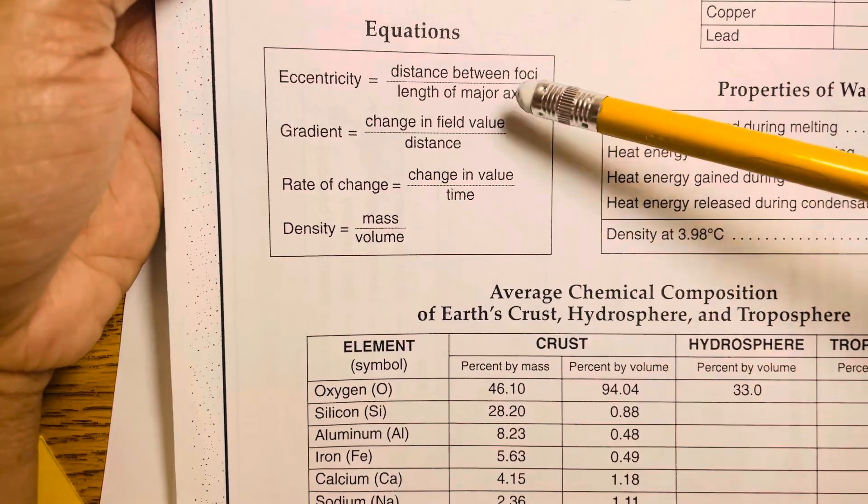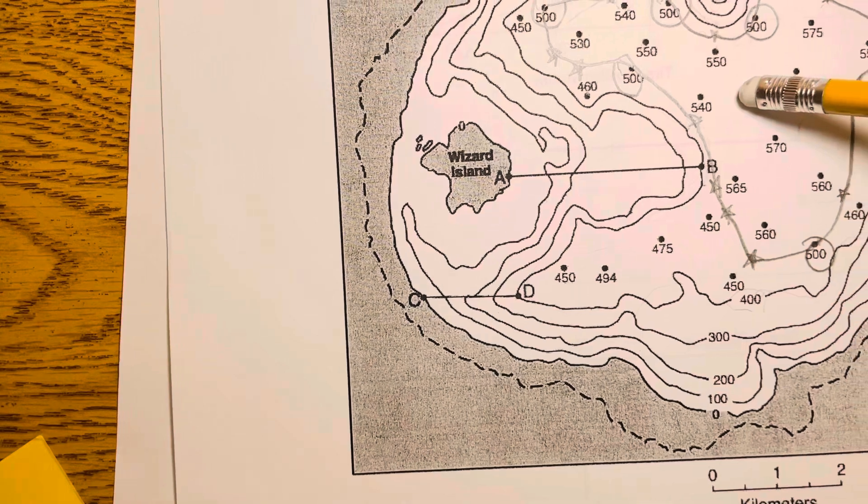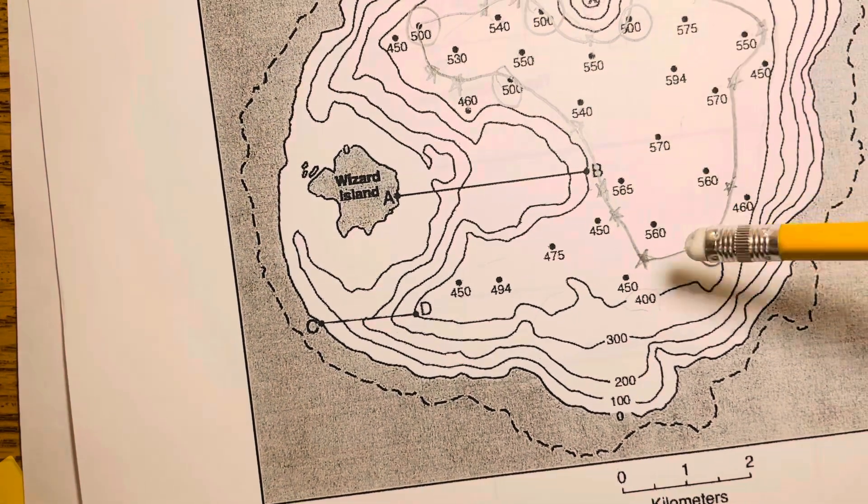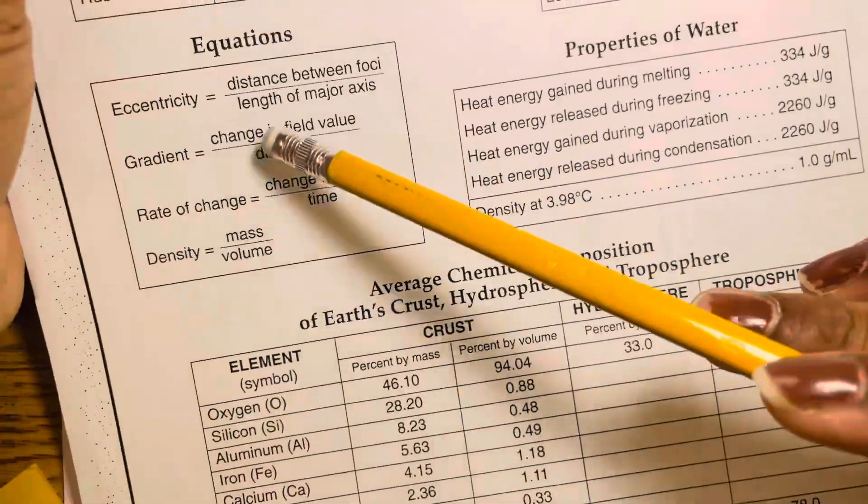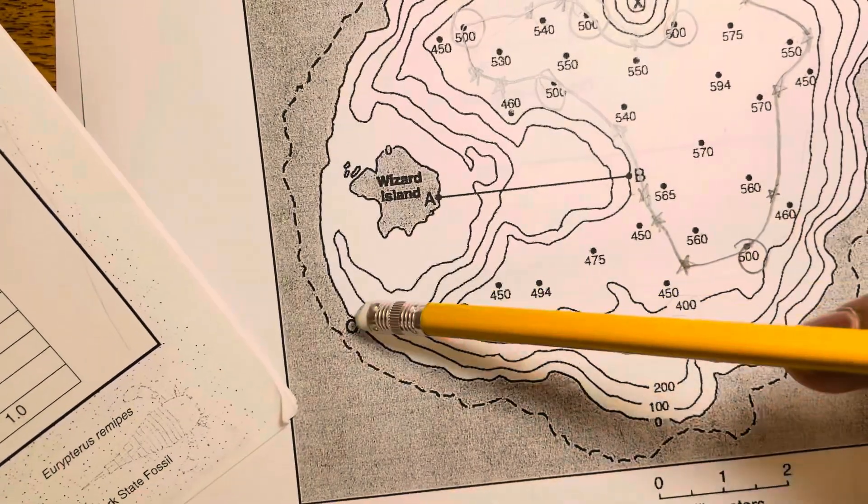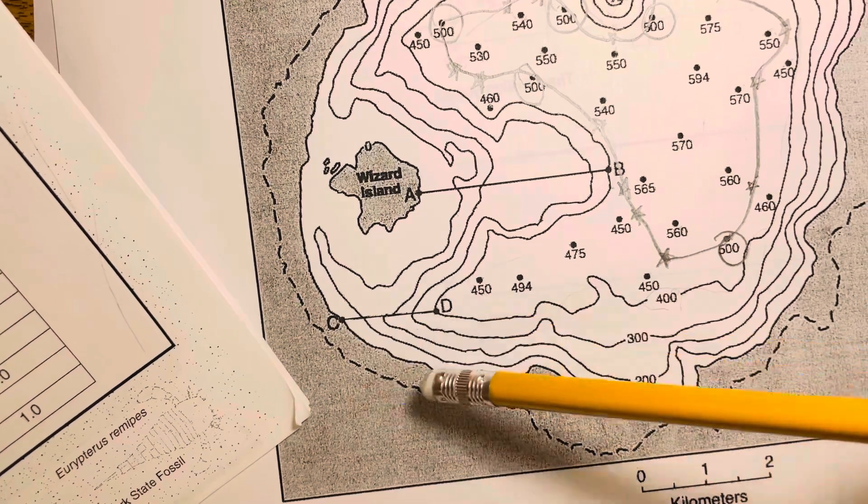The change in field value just means the change in the value on the map. For instance, on our field map our values represent depth of the lake. So from C to D you need the change or difference in the depth between C and D, divided by the distance between C and D.